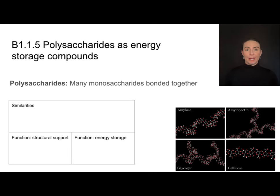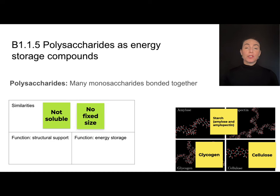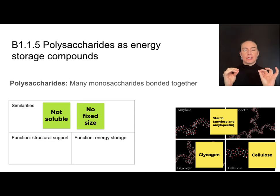There are lots of polysaccharides — many monosaccharides bonded together — with very important properties for living things. We're going to focus on just a small number of them. All of these polysaccharides are not soluble, and so that has big implications for things like transport and osmolarity. They have no fixed size, which means we can add a lot of monosaccharides together to make a huge molecule, or it can be a little bit smaller. They do have slightly different functions: cellulose is for structural support, mainly in plant cell walls; glycogen is the energy storage molecule in animals; and starch is the energy storage molecule in plants.